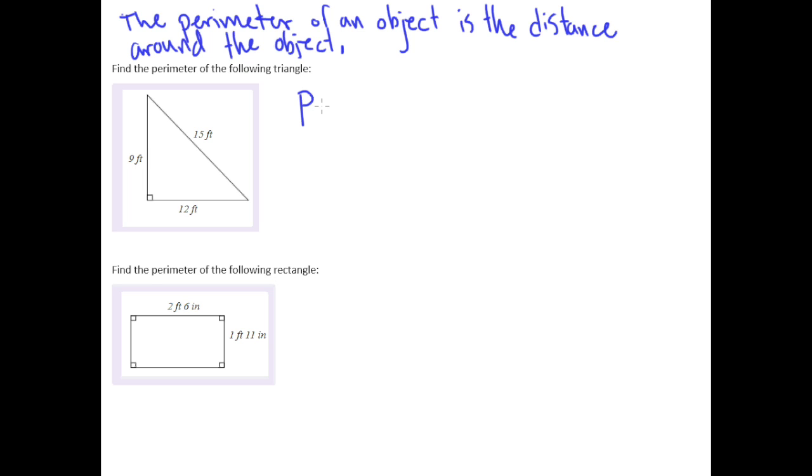P for perimeter is going to equal, in the case of this example, 9 plus 12 plus 15, which we can easily compute by adding them vertically. It doesn't matter what order we put this in. So 5 plus 2 is 7, plus 9 is 16, and 1 plus 1 plus 1 is 3. So we get 36, but always go back and look at the label that is on these distances. So here we have 36 feet, and that is the perimeter of that object.